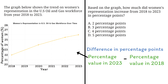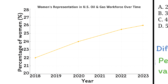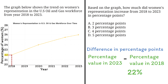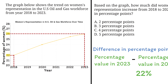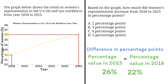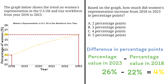Let's find the percentage value for the year 2018. Looking at our graph, the percentage value in 2018 is 22%. Now let's find the percentage value for 2023 — that is 26%. Thus, the percentage difference is 26% minus 22%. Note that in finding the difference, we chose the bigger percentage value, 26%, first, and then the smaller, 22%, second. So 26% minus 22% equals 4%. The increase in women's representation from 2018 to 2023 is 4 percentage points. The correct answer is therefore Option C: 4 percentage points.